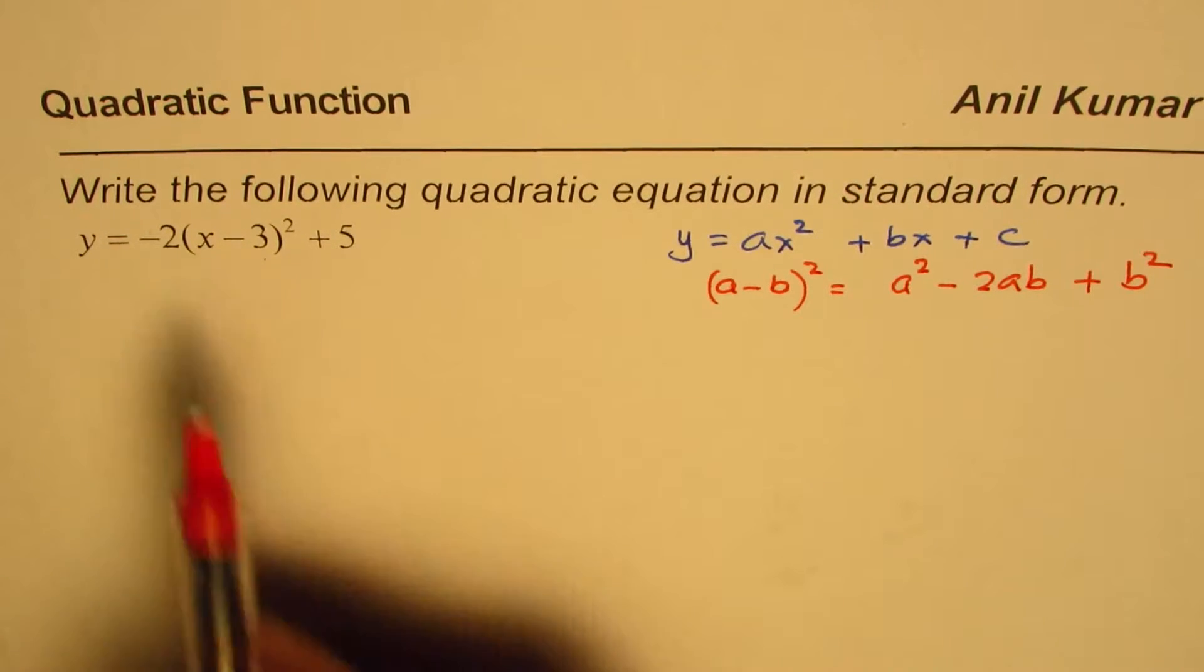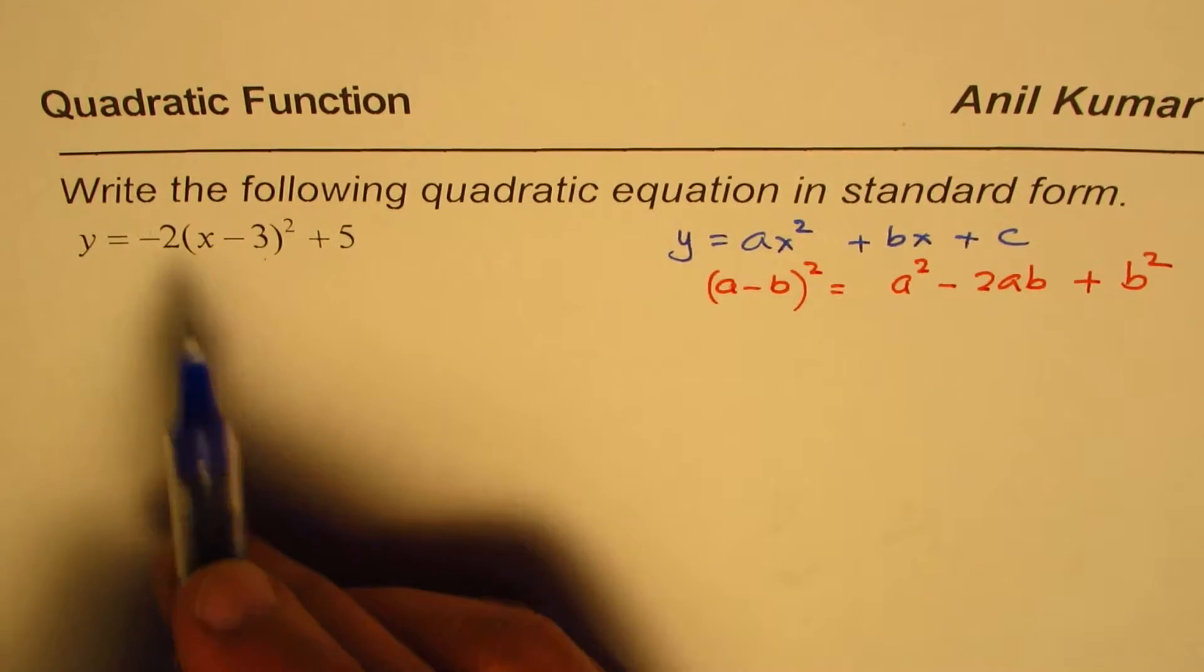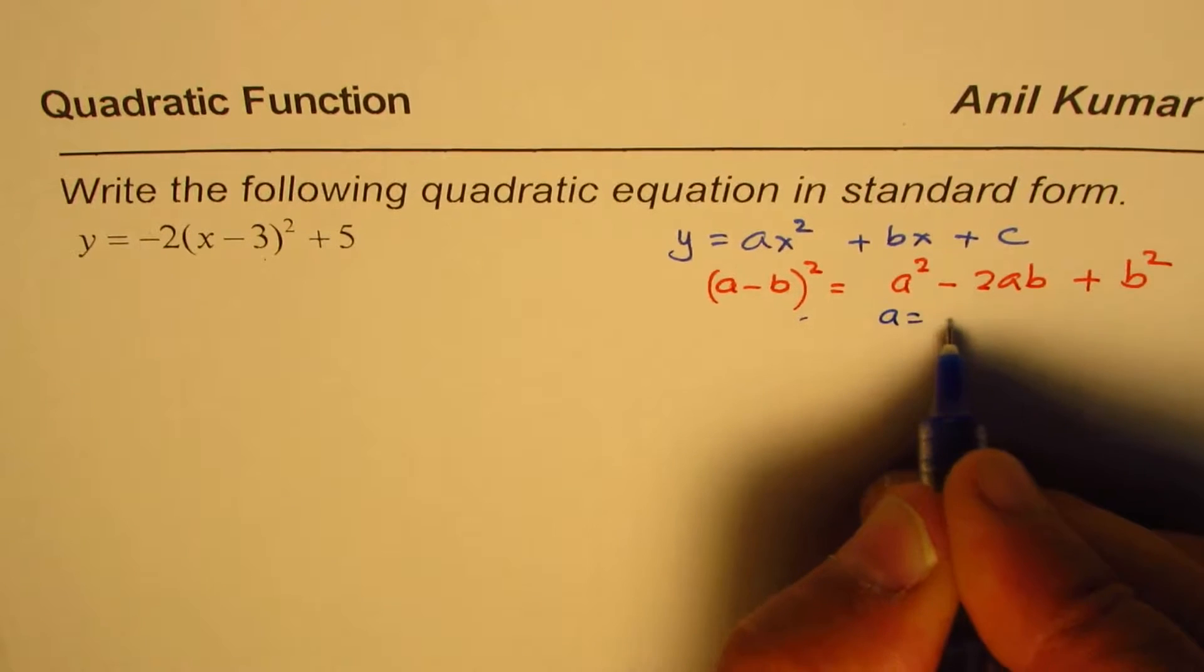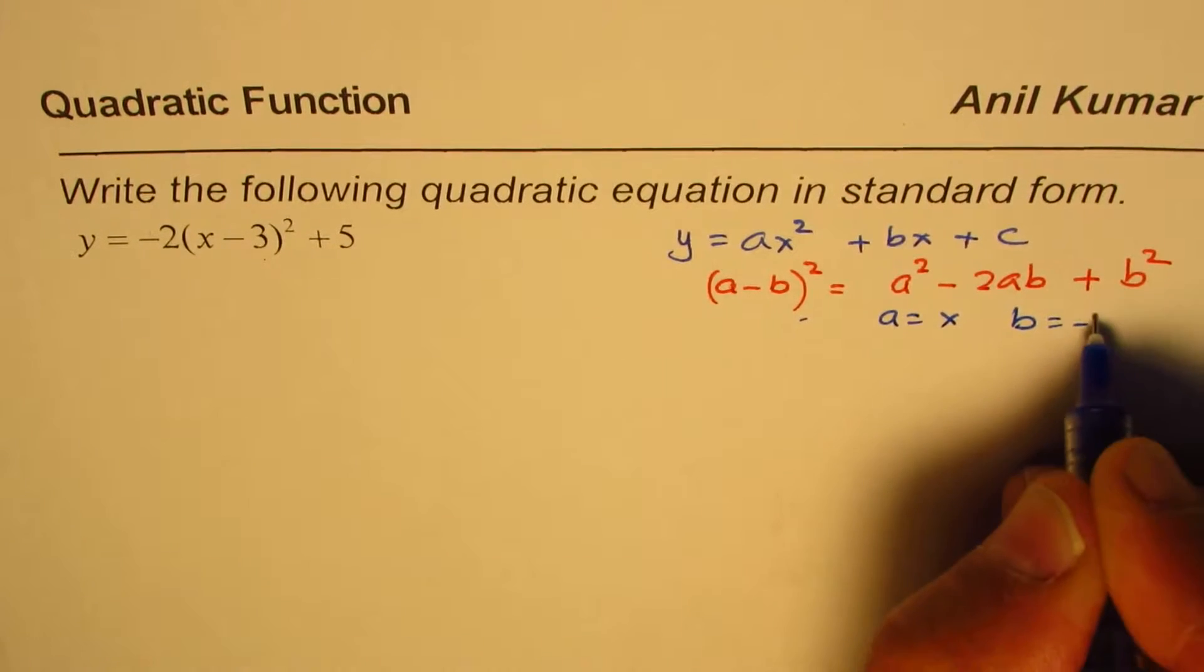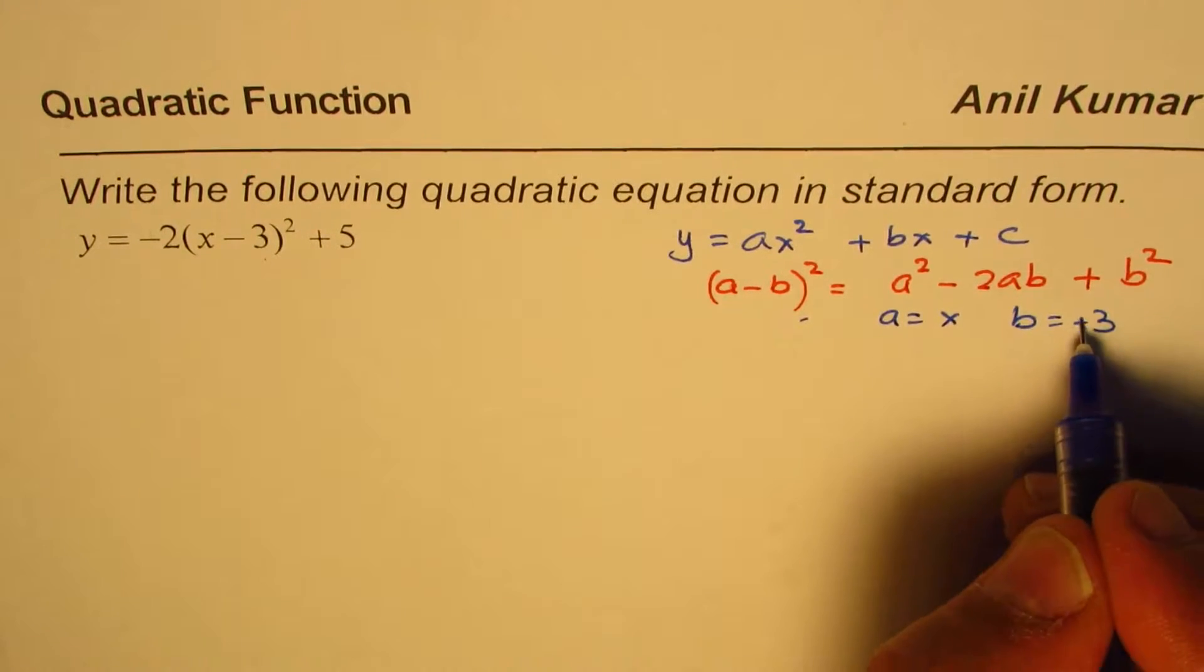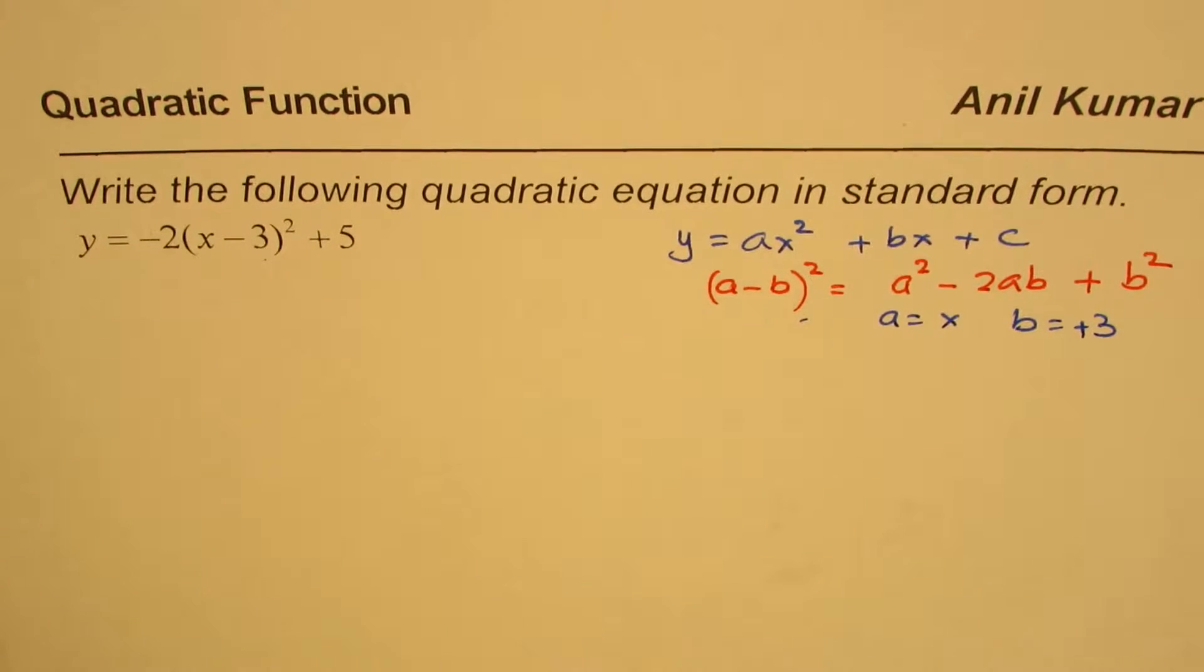In our case, a is equal to x and b is equal to 3. I should write plus 3 since we have taken minus here. So, we can apply this formula and then expand and combine the terms to get the standard form.